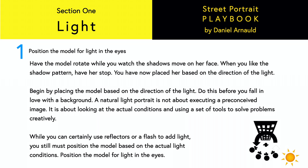Section one: Light. First, position the model for light and the eyes. Have the model move while you watch the shadows move on her face. When you like the shadow pattern, have her stop — you have now placed her based on the direction of the light. Begin by placing the model based on the direction of the light before you fall in love with the background. A natural light portrait is not about executing a preconceived image; it is about looking at actual conditions and using a set of tools to solve problems creatively. While you can use reflectors or a flash to add light, you still must position the model based on actual light conditions.